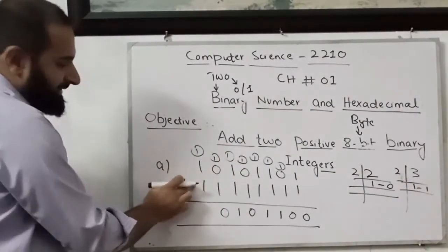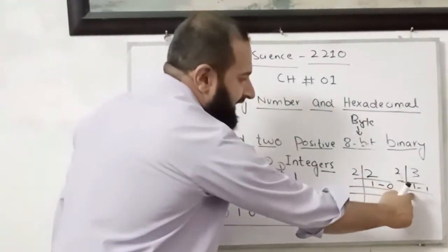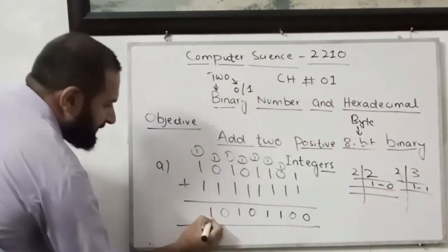Now again 1 plus 1 plus 1 is 3. So the ending number is 3. When we convert this ending number into binary we will get this one. So 2 goes into 3 once, and 1 is remaining. So I will write 1 over here.